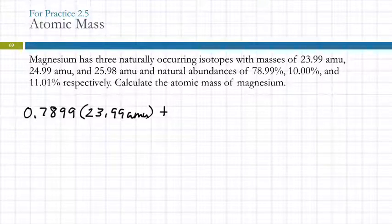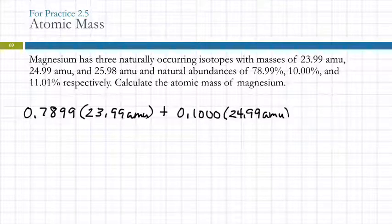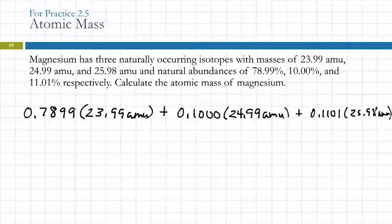Plus the fraction of the second one, 0.10000, times the mass of the second one, plus the third one times the mass of the third one. I know some people are very resistant to writing stuff down. So why do I have to write it out? Why do I have to show my work?